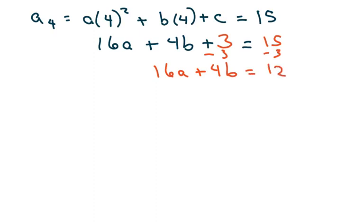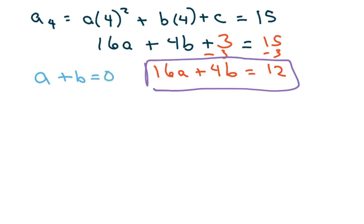Now I have to solve for a and b. So recall that I also had a plus b equals zero. Now I'm going to go ahead and reduce this. I can divide everything by four. So that's going to be 4a plus b equals three.